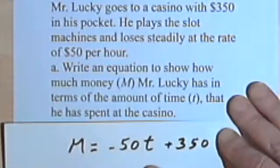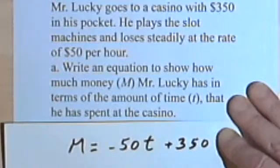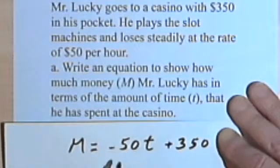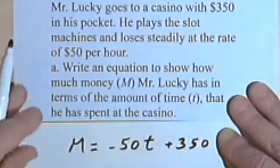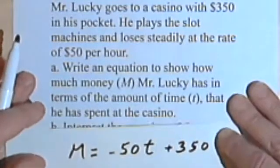If I rearrange the right side of the equation, I could say there's $350 minus 50t — minus $50 for each hour that he gambles. So there's the equation.